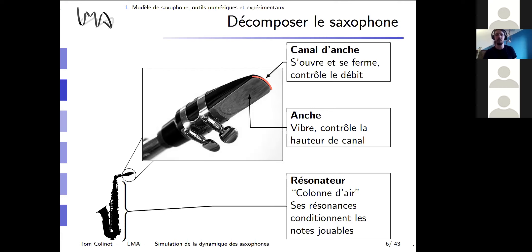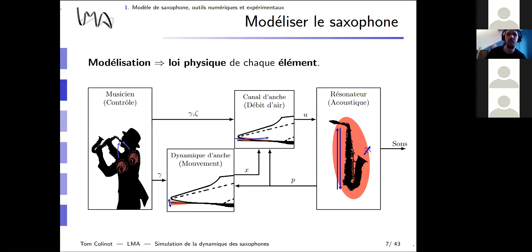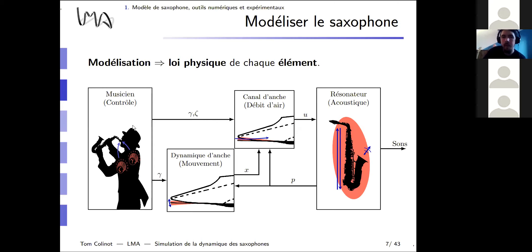To get a physical model, we must associate a physical law to each element. As shown on this block diagram, there is one important element I haven't mentioned: the musician. The musician controls the rest of the elements via control parameters gamma and zeta, which I'll discuss shortly. Through this control, the musician acts on a feedback loop that can oscillate and produce sounds under certain conditions.